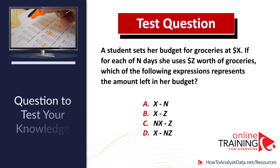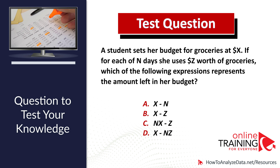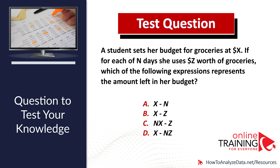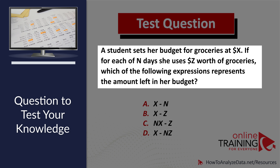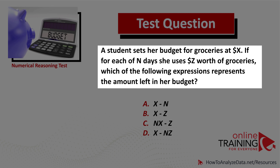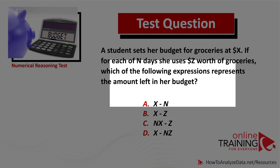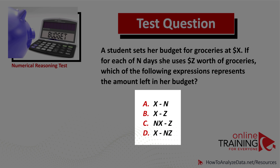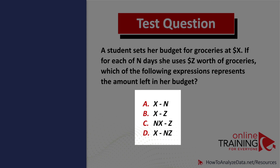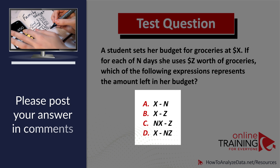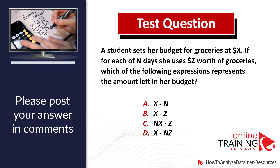Here is a question from the real test to help you test your knowledge. A student sets her budget for groceries at X dollars. If for each of N days she uses Z worth of groceries, which of the following expressions represents the amount left in the budget? Choice A: X minus N. Choice B: X minus Z. Choice C: X minus Z. Choice D: X minus NZ. Please post your answer in the comment section and myself or other experts will reply with the correct answer.